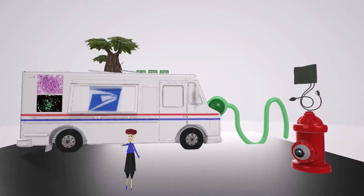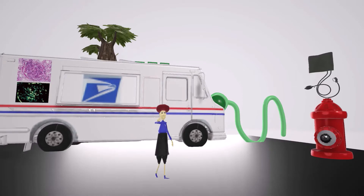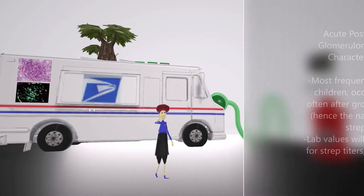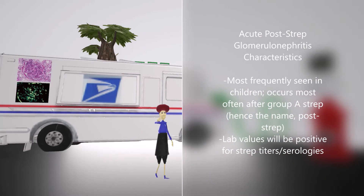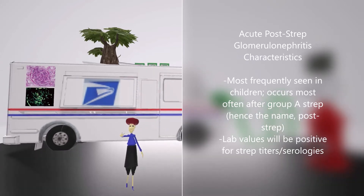This post officer is actually a kid, because acute post-streptococcal glomerulonephritis usually occurs in children. In this scene his truck crashed into the nephron and he's trying to find someone for help. Let's talk about this disease.